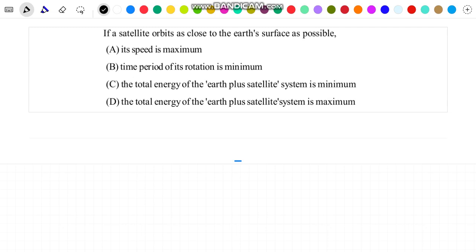Let us start with its orbital speed. We know that orbital speed of a satellite can be written as root of GM by R. Now with decrease in the value of R, orbital velocity increases. Since this satellite is orbiting as close to the surface of Earth as possible, the value of R is minimum, resulting in maximum possible orbital speed. That is, option A is correct.